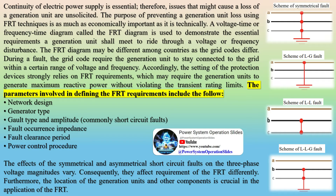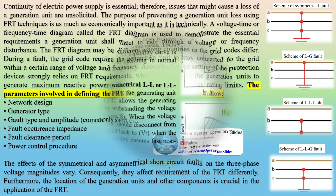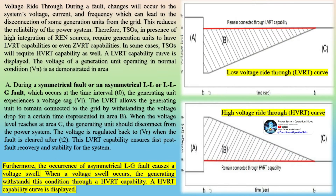A symmetrical fault is balanced and it affects all phases equally, meaning the voltage drops of all three phases are equal and have the same magnitude, which is proportional to the severity of the fault. A symmetrical fault is the most severe because it involves all three phases, and roughly 5% of faults in a three-phase system are symmetrical.